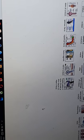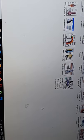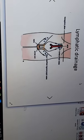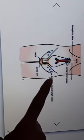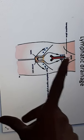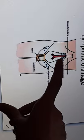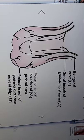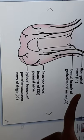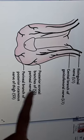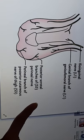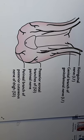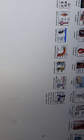For venous drainage, the veins correspond to the arteries and drain into the corresponding veins. For lymph drainage, the wall of the scrotum drains into the superficial inguinal lymph nodes, while the deeper structures drain into the paraaortic nodes at the L1 vertebral level. For nerve supply: anteriorly, the ilioinguinal nerve and the genital branch of the genitofemoral nerve supply the scrotum; posteriorly, supply comes from the posterior scrotal nerves of the perineal nerve and the perineal branches of the posterior cutaneous nerve of the thigh.